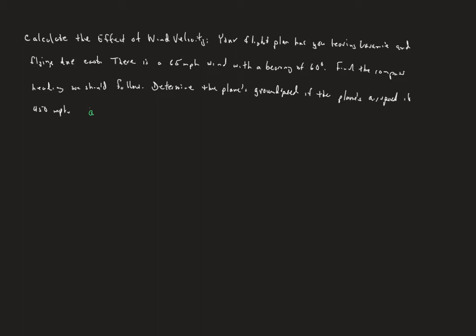I'm going to use vector A to represent airspeed — that has a direction and a magnitude. Airspeed is the speed of the plane with no wind; that's just what the engine makes us do. Wind speed is also a vector — I'll use blue for that. And then ground speed, which I'll show in yellow, is going to be the speed and direction of our plane after the wind has pushed us off course.